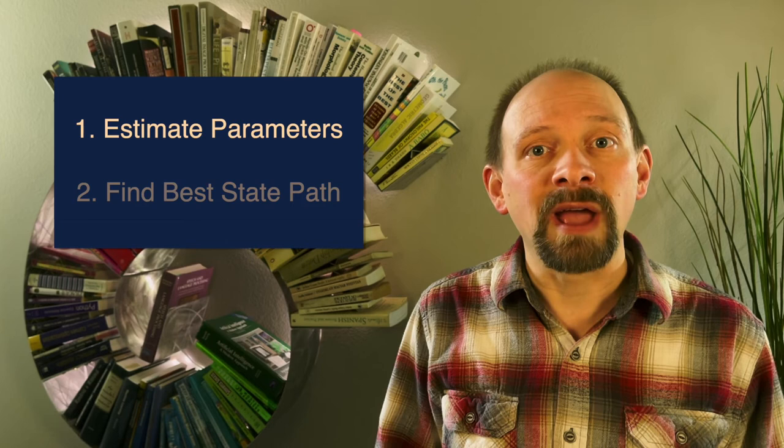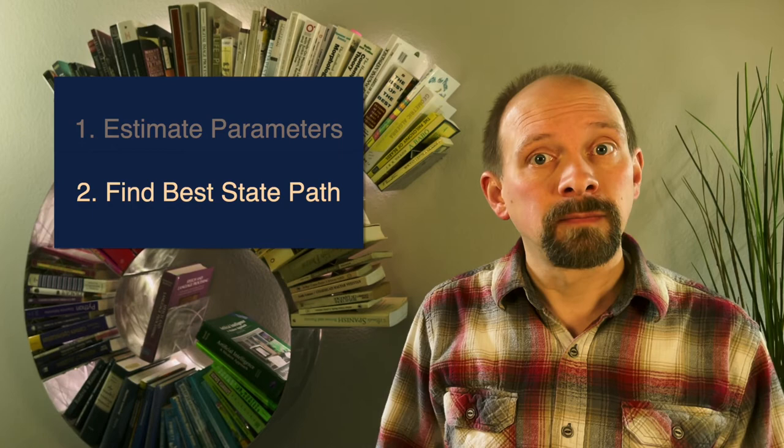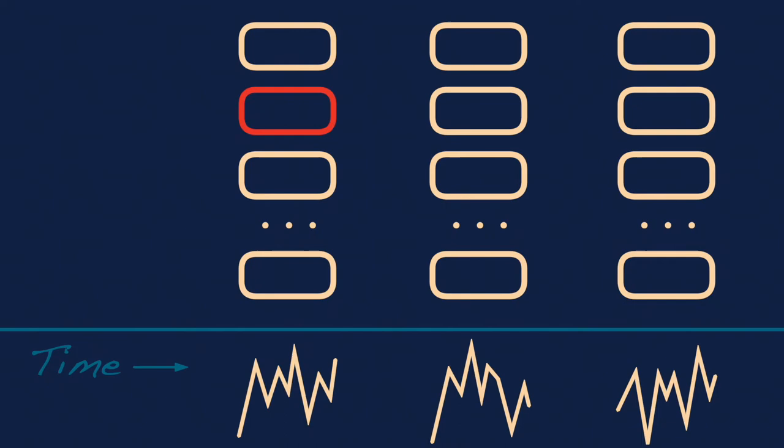So now that we have an HMM with estimates for all three parameters, how do we use this model to predict the most likely sequence of words? The answer is the Viterbi algorithm. A clever application of dynamic programming, a class of algorithm where a final calculation is derived by computing, saving, and reusing intermediate results. Named after Andrew Viterbi, dynamic programming for HMMs was, in reality, independently discovered by several people in the late 1960s. The Viterbi algorithm exploits the fact that the only variable that affects the probability of being in a particular state at the next time step is the probability of the model being in the current state at the current time step.